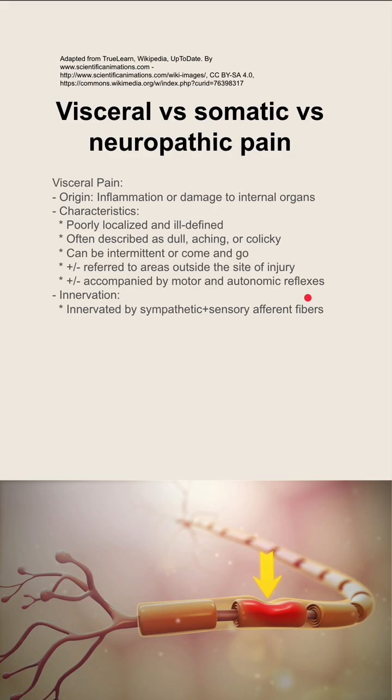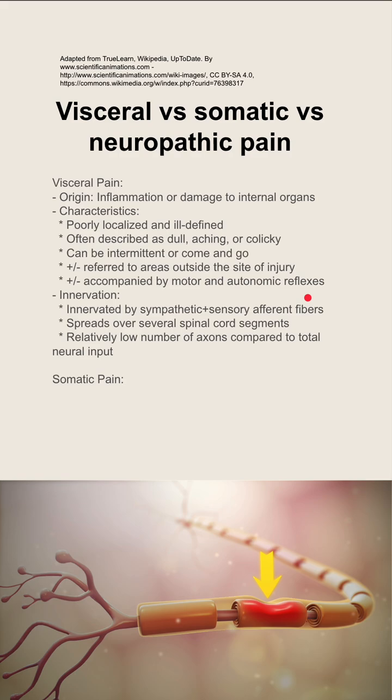The innervation of the visceral organs are sympathetic and sensory afferent fibers, and they spread over several spinal cord segments. There's a relatively low number of axons compared to total neural output.